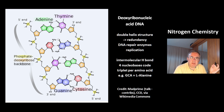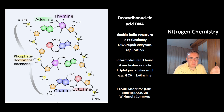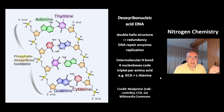There are four nucleobases, but there are 21 amino acids. That's why you need a triplet of nucleobases to code one amino acid. For example, the triplet GCA is the code for L-alanine — GCA is guanine, cytosine, adenine.